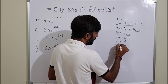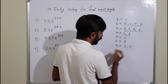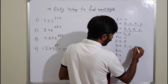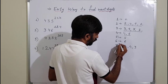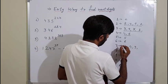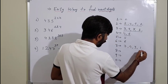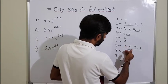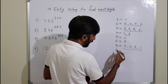For 7: 7 raised to 1 gives unit digit 7, 7 squared gives 49 so unit digit 9, 7 cubed gives 343 so unit digit 3, and 7 raised to 4 gives unit digit 1. So there are 4 possibilities — 7, 9, 3, 1 — that repeat in a cycle.